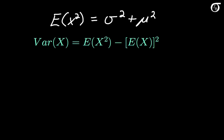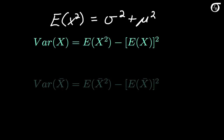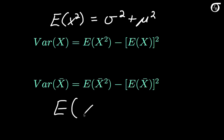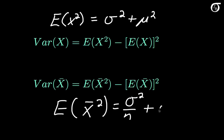In the proof we're also going to need the expectation of the square of the sample mean. Rearranging the same relationship, the expectation of x bar squared equals the variance of the sample mean x bar, which is sigma squared over n, plus the square of the expectation of x bar. Since on average the sample mean equals the population mean, the square of the expectation of x bar is just mu squared.